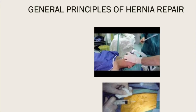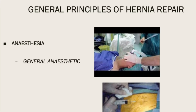All hernia surgery will require some form of anesthesia. The commonest is the general anesthetic, as seen in the picture here, where a tube is placed through the throat and into the airway.